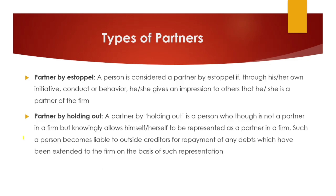The next type is partner by estoppel. A person is considered a partner by estoppel when through their own initiative, conduct, or behavior they give an impression to others that they are a partner of the firm. So based on their actions, initiative, or behavior, they are creating the idea in others' minds that they are a partner of the firm.